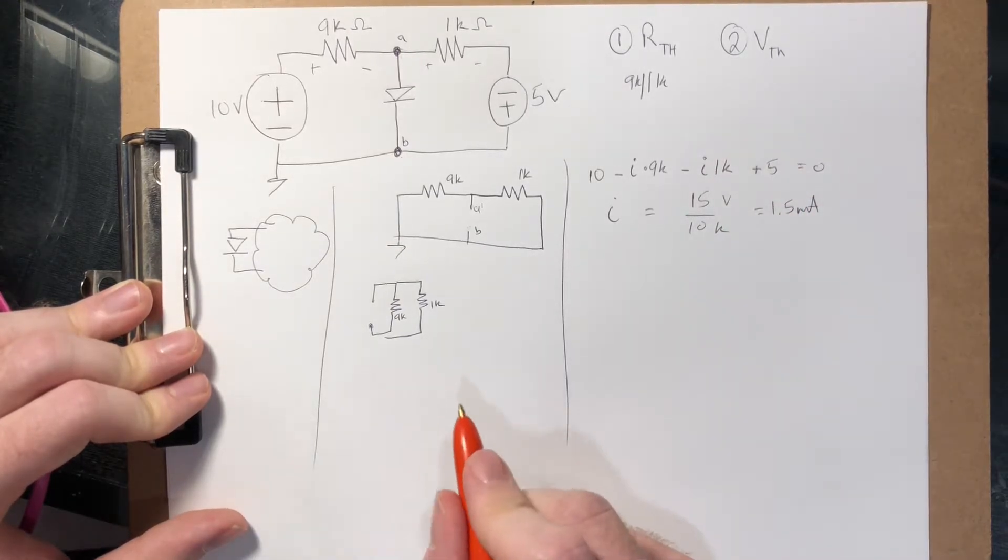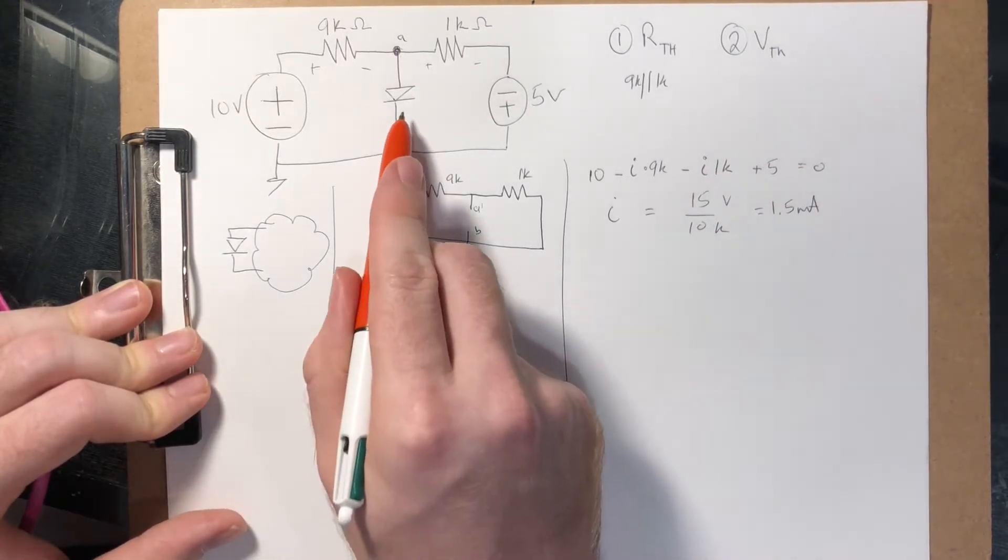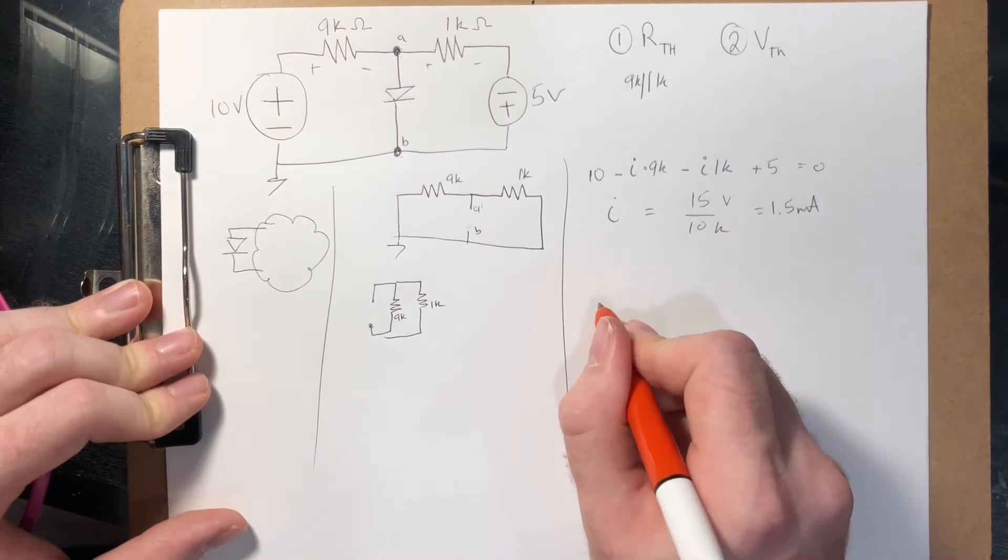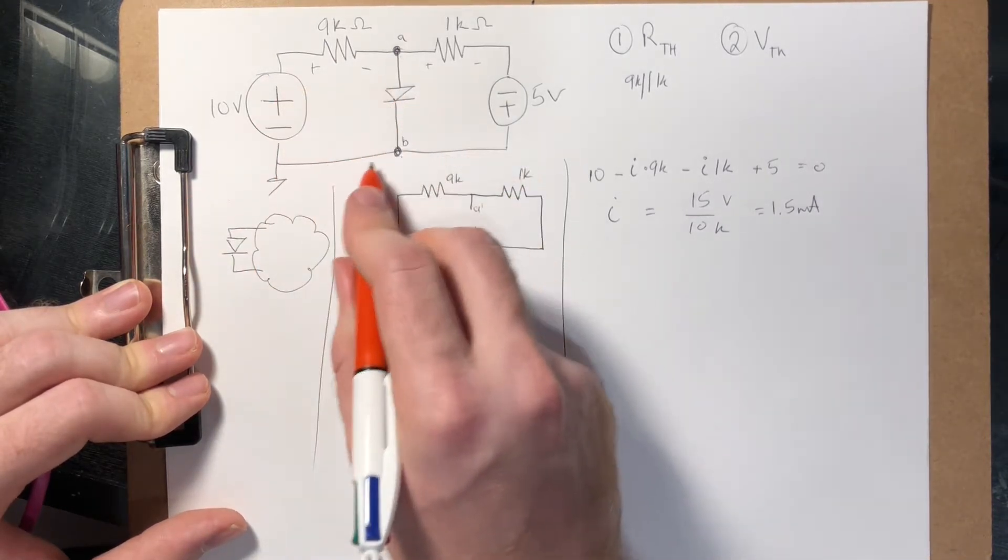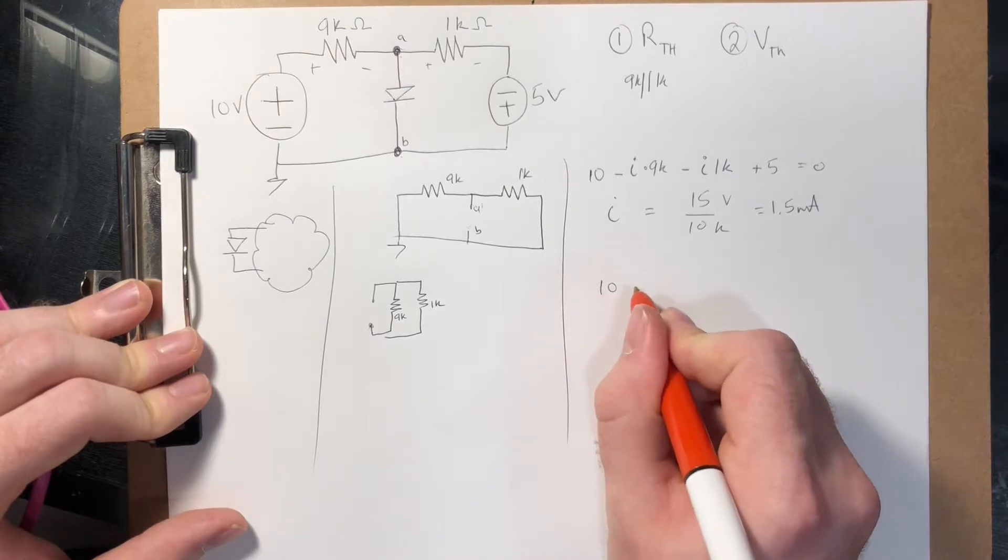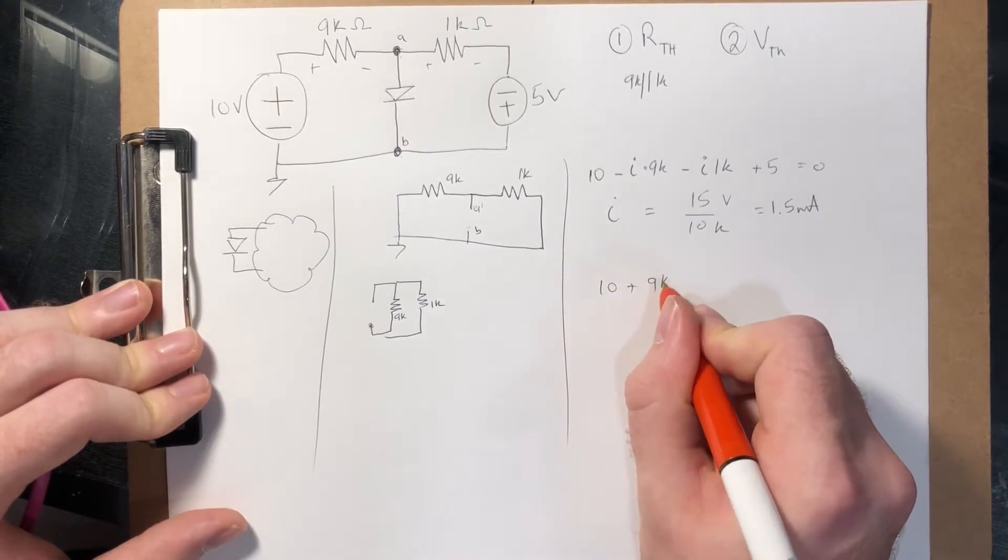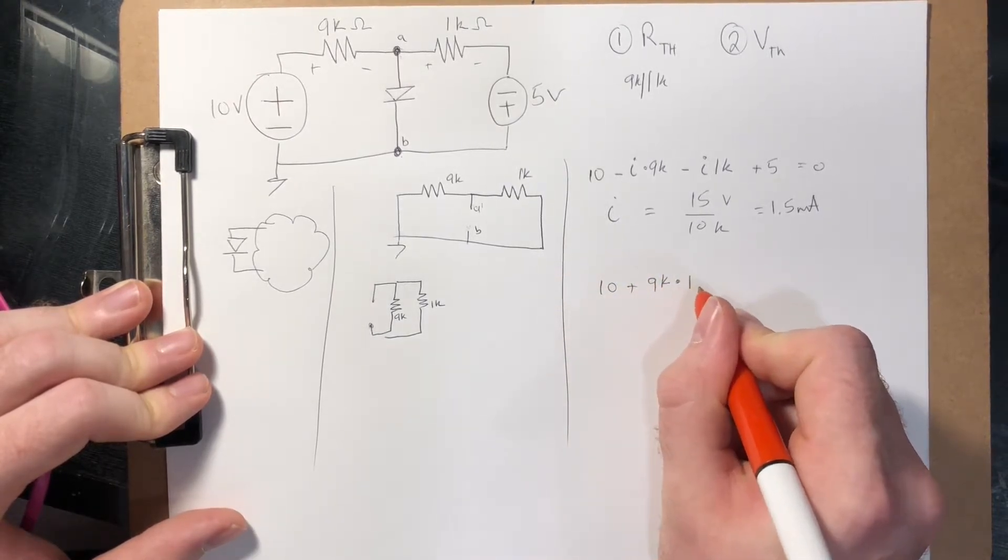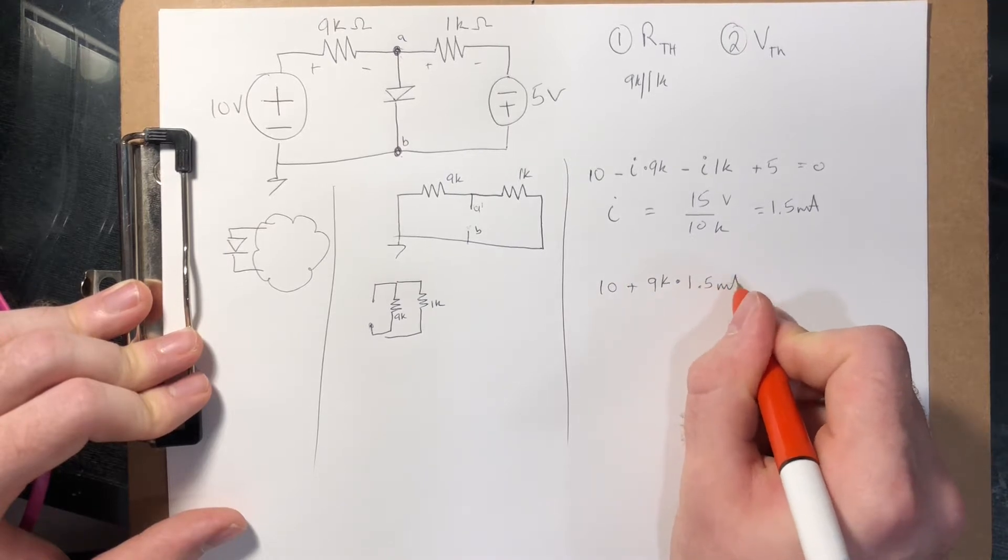So then to find the open circuit voltage here, we start here again with our loop. It would be 10 plus 9k times 1.5 milliamps.